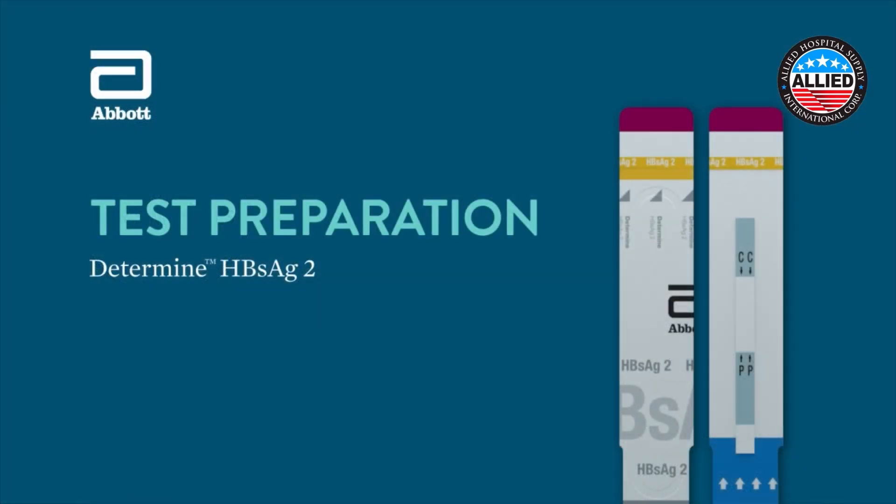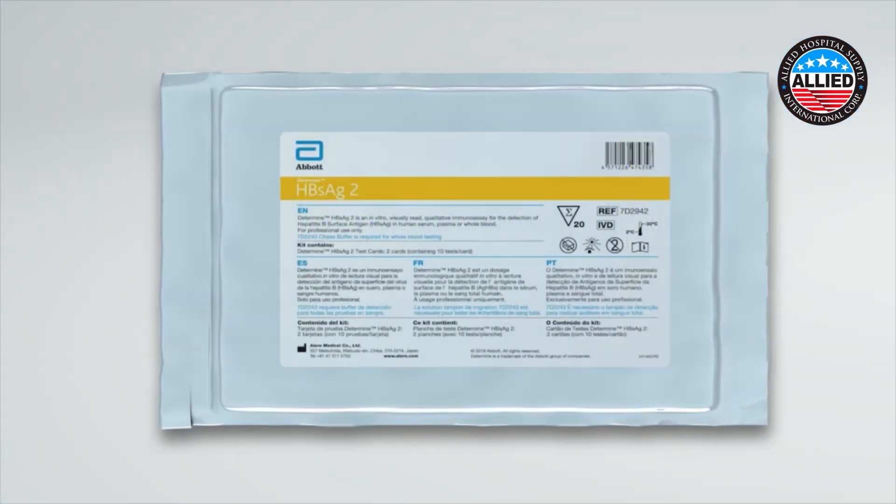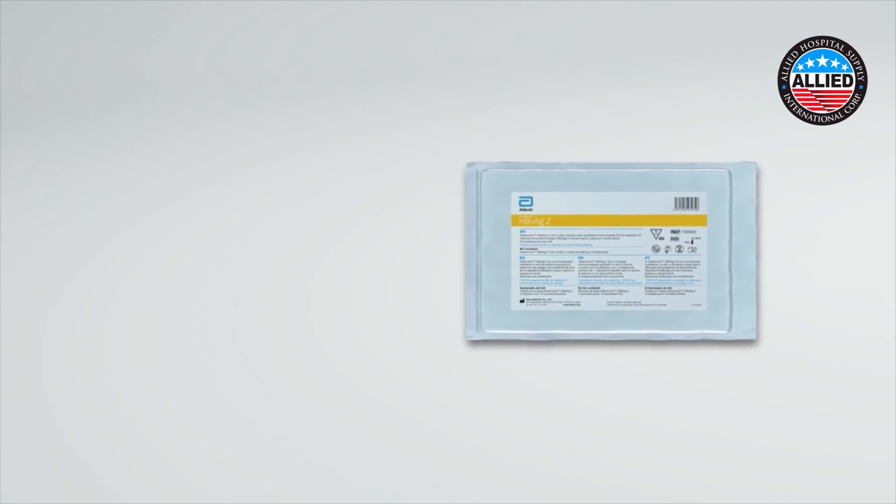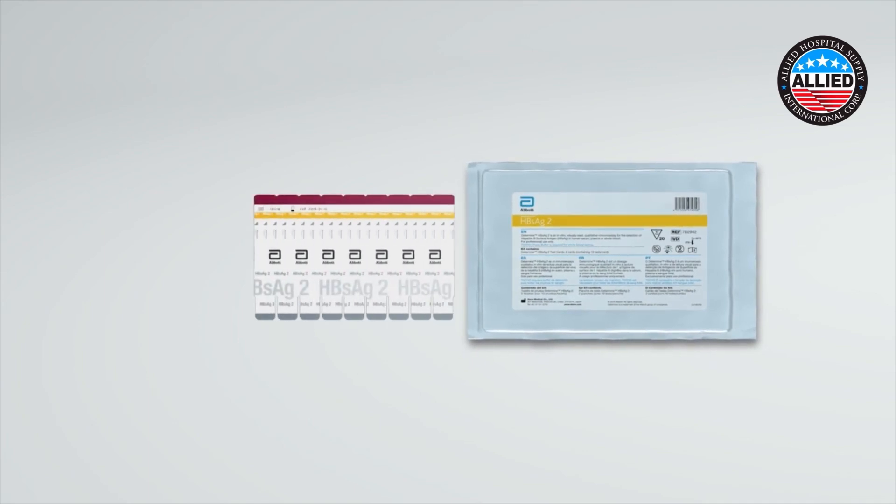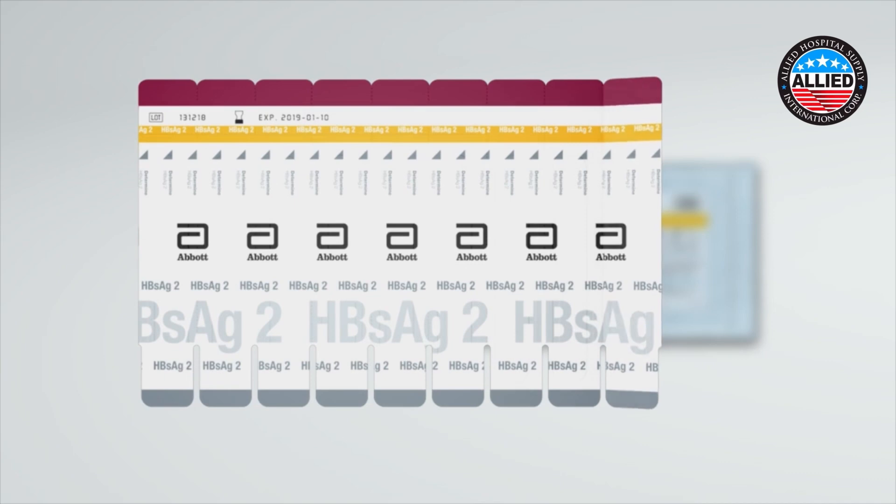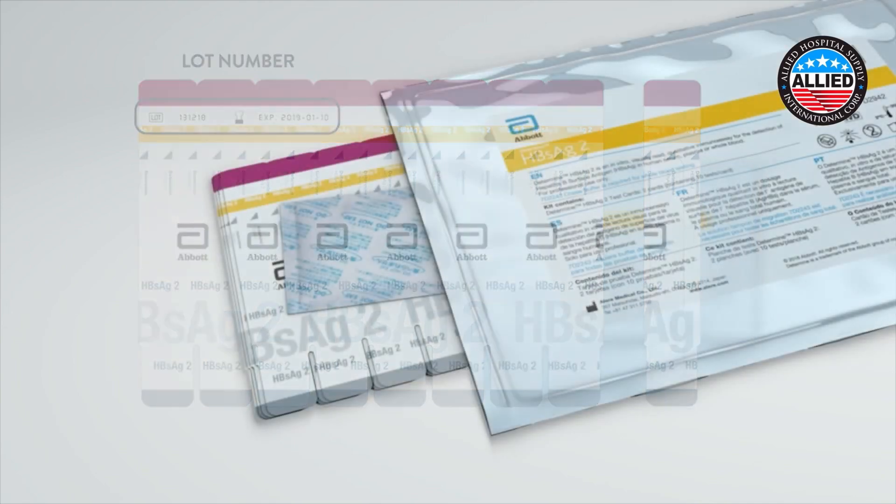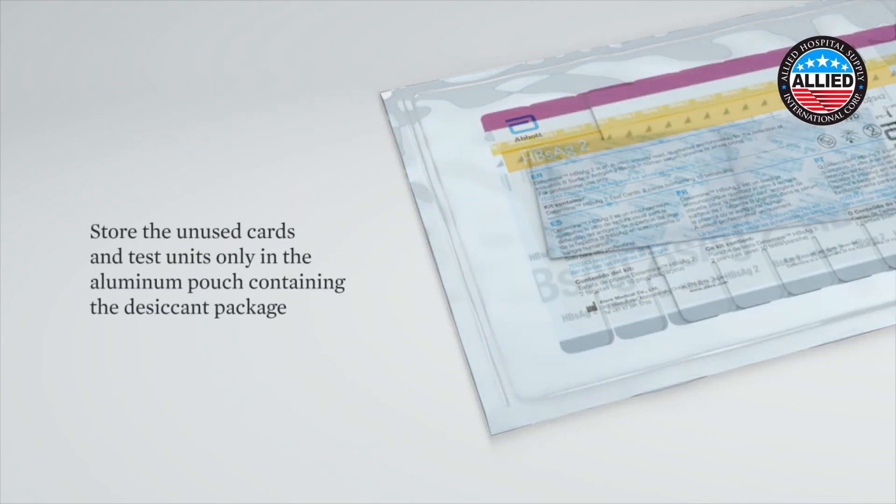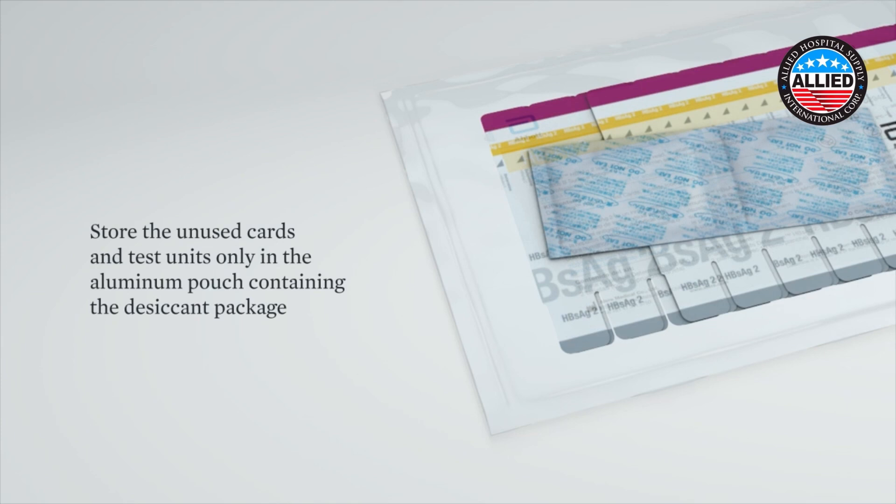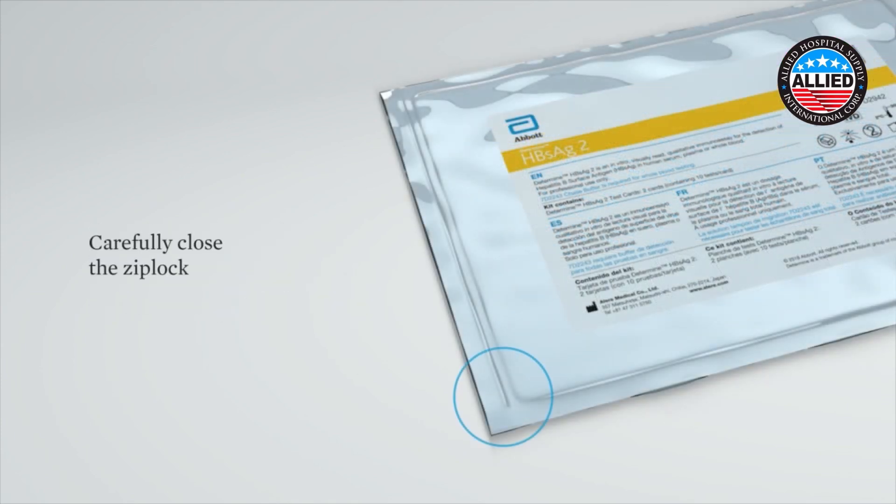Test preparation. Open the aluminum Ziploc pouch containing the Determine HBsAg2 test cards. Remove the desired number of test units from the 10 test unit card by bending and tearing at the perforation. Removal of the test units should start from the right side of the card to preserve the lot number, which appears on the left side. Restore the unused cards and test units only in the aluminum pouch containing the desiccant package. Carefully close the Ziploc so that the cards are not exposed to ambient humidity during storage.